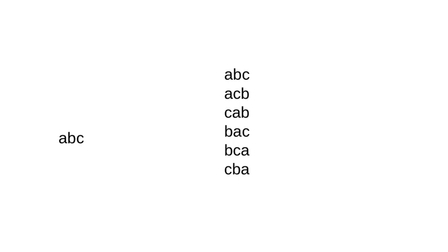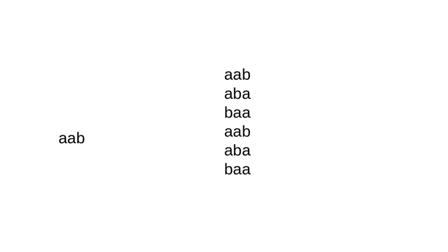Now let us take up AAB. Try to create all the permutations: AAB, ABA, BAA. And from this, what you observe is yes, there is a palindrome — ABA is a palindrome. Meaning, AAB can be arranged into a palindrome. So for this case, you should print yes. For the previous case, ABC should print no.